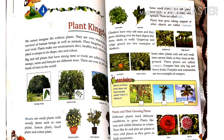Plants that grow by taking support of other objects are called climbers. They grow climbing over hard objects like trees, sticks, and walls. Grape vine is an example of a climber.